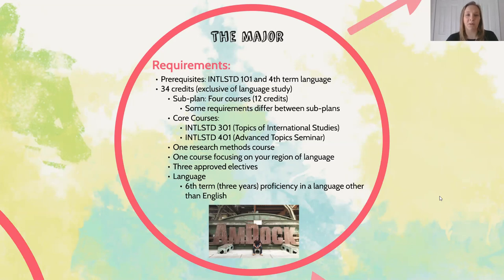You are also required to complete three approved electives — this is where a real conversation happens between the advisor and the student. You choose courses specifically of interest to you that fall into three categories: further coursework from your sub plan, courses related to your region, or courses completed during study abroad or other international and comparative opportunities.